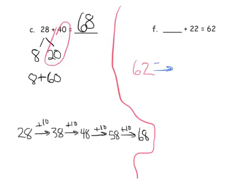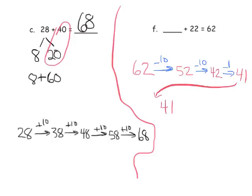Continuing to work backwards: subtract 10 to get 52, subtract another 10 to get 42, then subtract 1 to get 41, and subtract another 1 to get 40. There is our missing addend — 40 plus 22 is equal to 62.